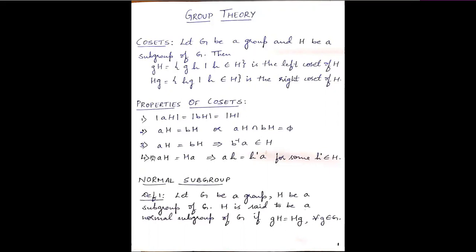The third property says two cosets are equal when aH is equal to bH, which implies that b⁻¹ star a belongs to the subgroup H. The fourth property is: if the left coset is equal to the right coset, then aH equals some element h' times a, for some h' belonging to H. It need not be that aH equals Ha; it will be some other element h' belonging to H.